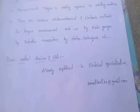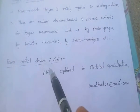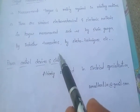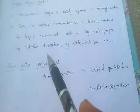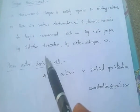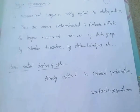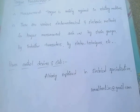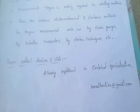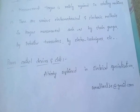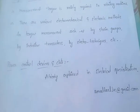Power control devices and circuits were already explained in the electrical specialization part. They are nothing but power diodes and thyristors. Thyristors are power control devices. Thank you friends. In the next video I will discuss the remaining parts of instruments and measurements.